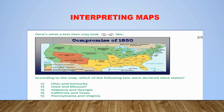So now that you have read your map key and examined your map accordingly, you want to go back to your question, reread your question, and then look at your options. You want to apply your map key and information from your map to your question. According to the map, which of the following two were declared slave states? You want to take note of the key terms in the question — here we have two slave states — so we know that we are looking for two states that were declared slave.